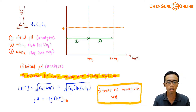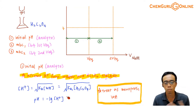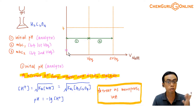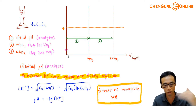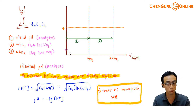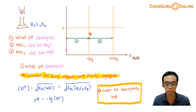In this case, we are not given any specific value here, but we can just estimate — pH will be less than 7. If we are given the value, we can calculate that. In this case, we will just estimate it.